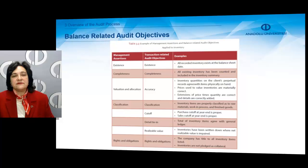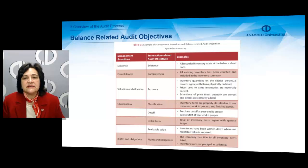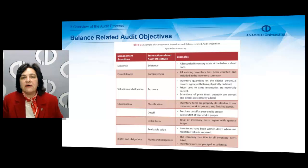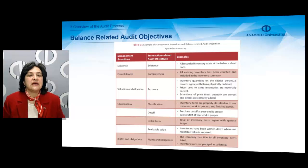Balance-related audit objectives — here is an example about inventory. For the management assertion existence, the audit objective is also existence. An example: all recorded inventory exists at the balance sheet date. For completeness, all existing inventory has been counted and included in the inventory summary. For management assertion valuation and allocation, the audit objective name is accuracy — inventory quantities on the client's perpetual records agree with items physically on hand.